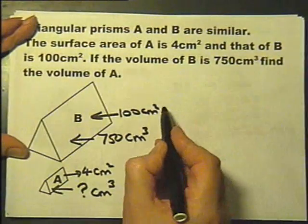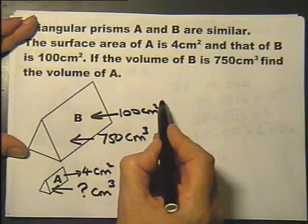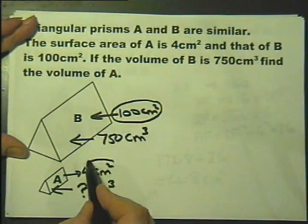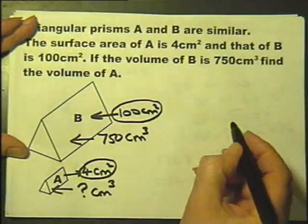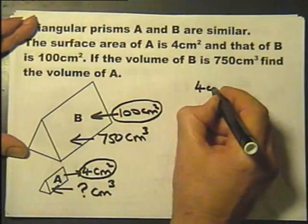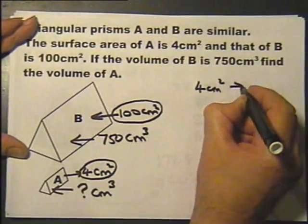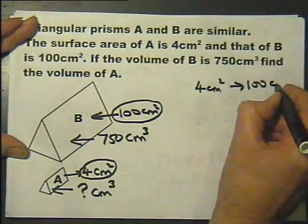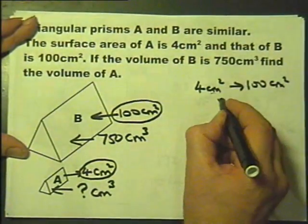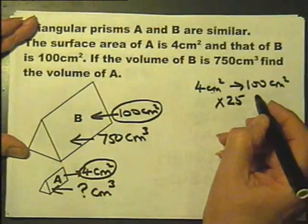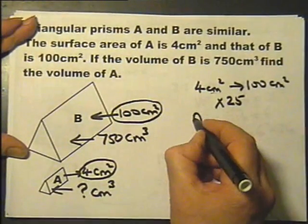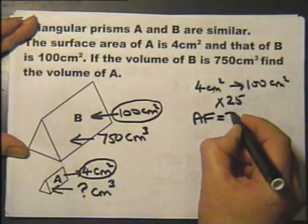So let's look at the connection between the surface areas. That's the surface area of B and that's the surface area of A. That's been multiplied by 25. So in other words, the area factor is 25.